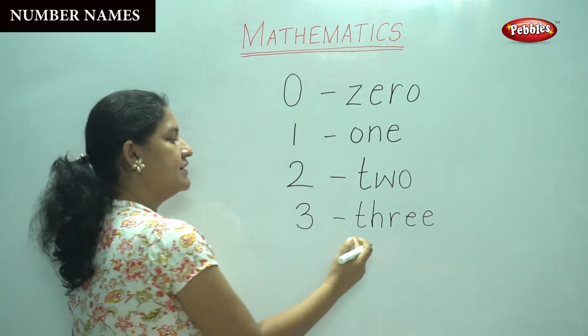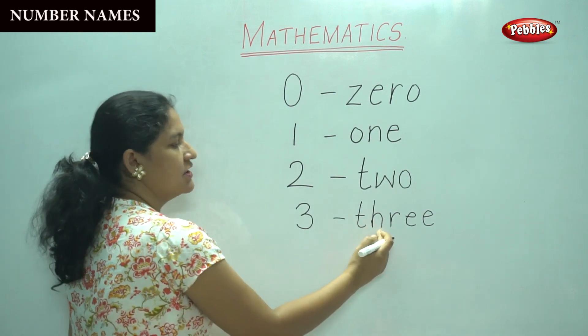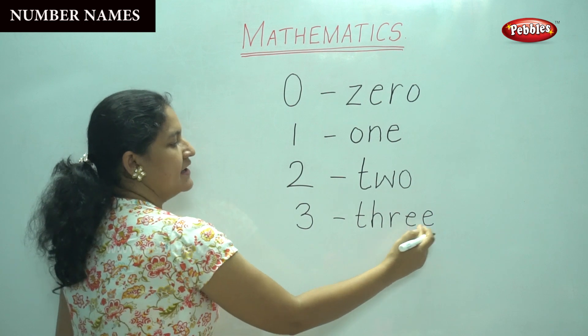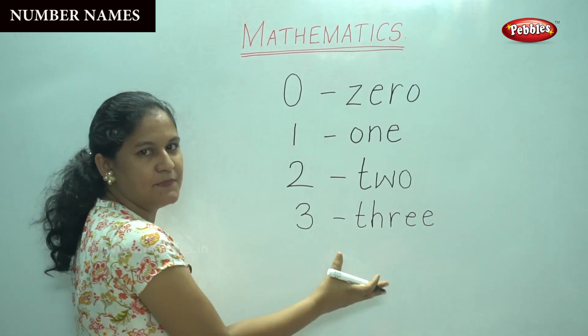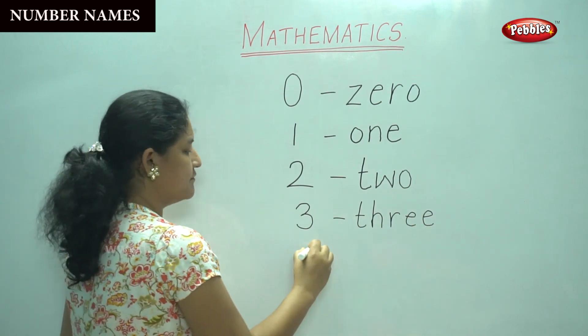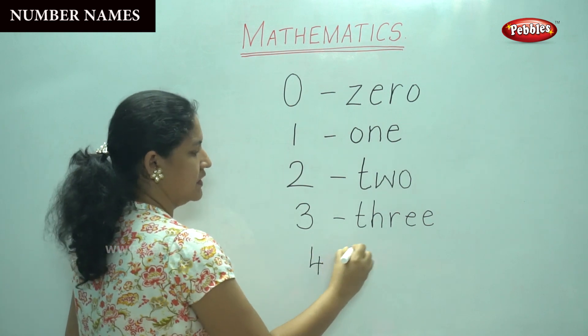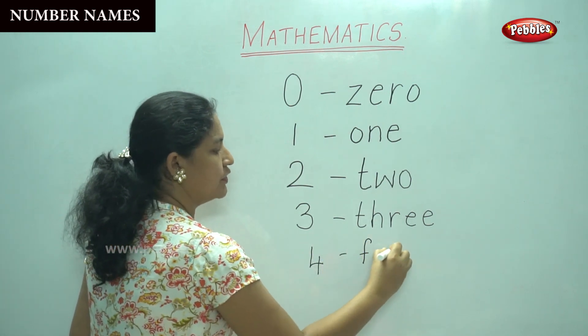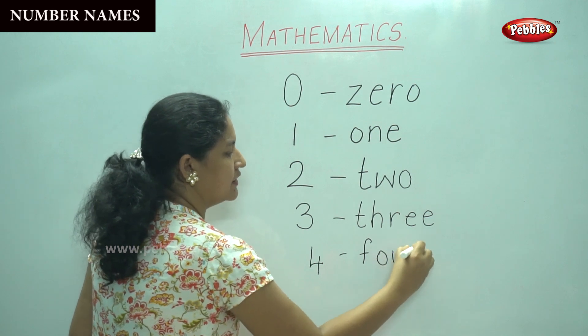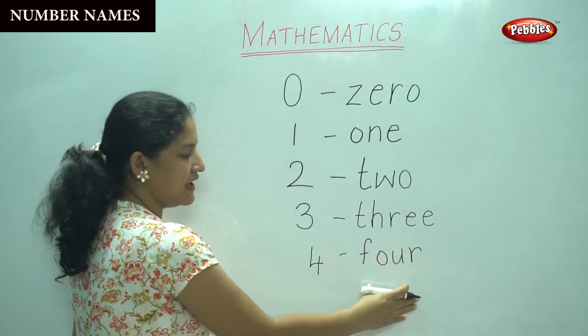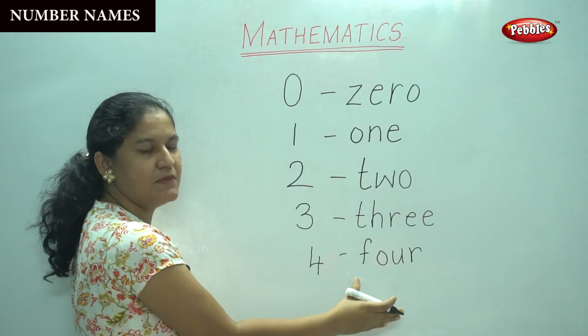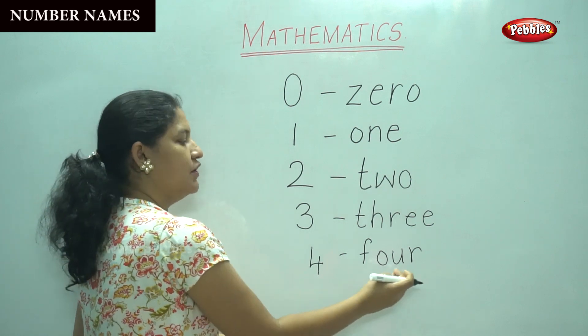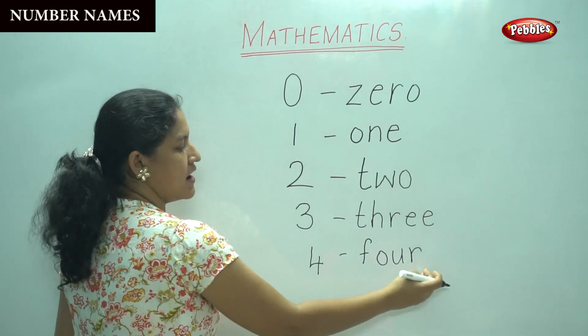Can we say it again? T-H-R-E-E, 3. Number 3. Number 4: F-O-U-R, 4. This is the spelling or the number name for number 4: F-O-U-R, 4.